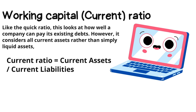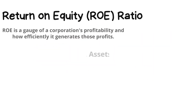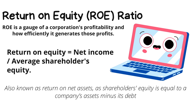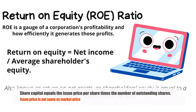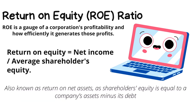Another important ratio is the return on equity ratio. It basically gauges the company's profitability and how efficiently the company generates profit. It is calculated by dividing the net income by shareholder equity. For example, a 15% ROE indicates that the company earns Rs.15 on every Rs.100 of its share capital. Return on equity is also known as return on net assets, as shareholder equity equals the company's assets minus its debt.